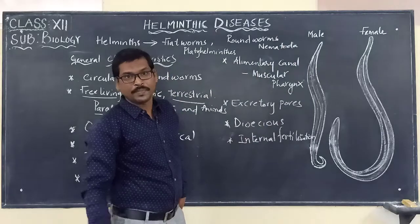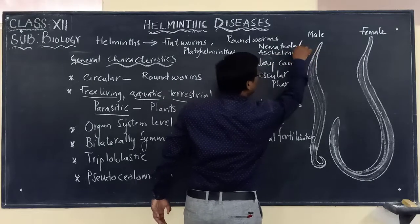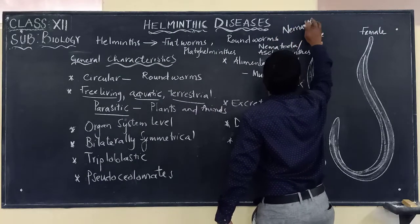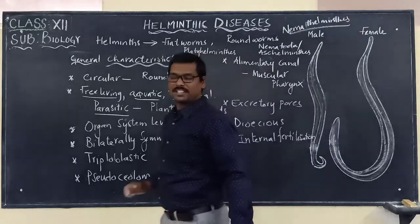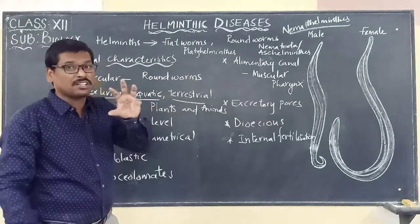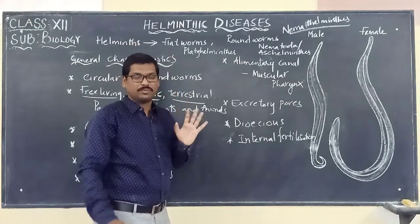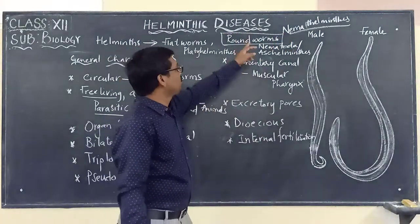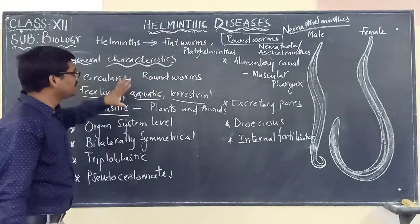The phylum Nematoda is also called Aschelminthes or Nematyhelminthes. In this session we are going to discuss about the diseases which are caused by the roundworms, meaning diseases caused by the Nematoda, which are comprising of roundworms.